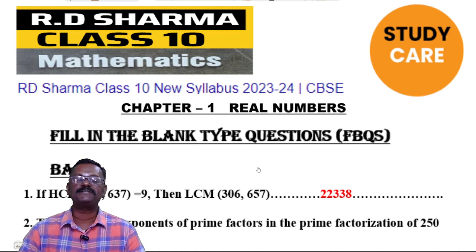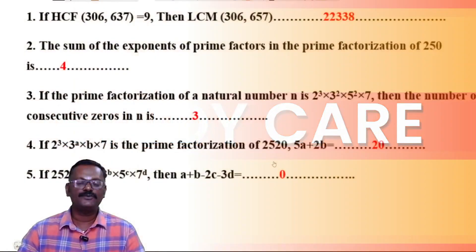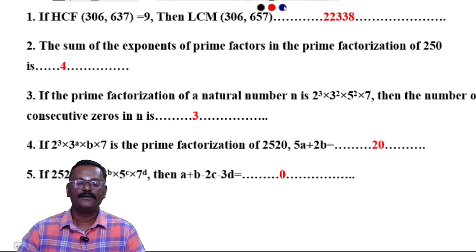Hi students, welcome to my channel Study Care. We are looking at RD Sharma Class 10 Mathematics, Chapter 1 Real Numbers, fill in the blanks type questions. First question: If HCF of 306, 637 equals 9, then the LCM of 306, 657...